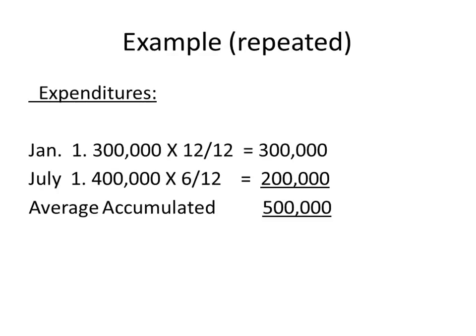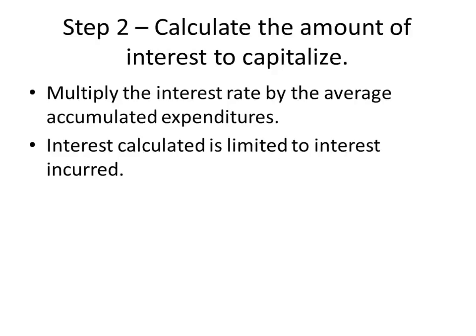Otherwise, you have to time-weight the expenditures, as shown in the previous example. So here we're just time-weighting them. If we incurred $700,000 evenly throughout the year, you just take the total and divide it by two. Step two: calculate the amount of interest to capitalize.